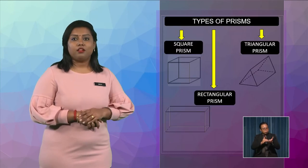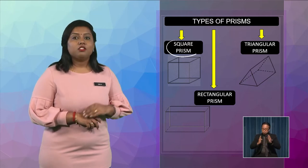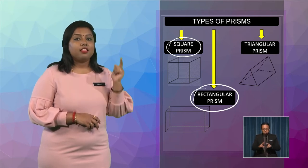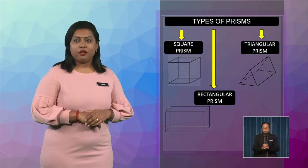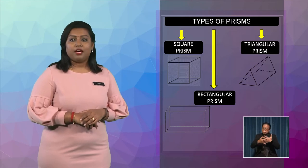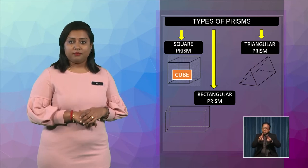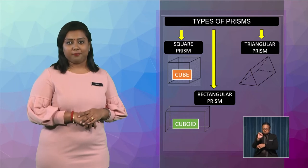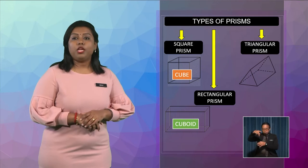Now, Pupils, let's take a look at the diagram. There are 3 types of prisms, namely square prisms, rectangular prisms, and triangular prisms. A square prism is also called a cube in 3-dimensional shape, while a rectangular prism is also called a cuboid in 3-dimensional shape. Here are the 3 types of prisms that we will learn today.